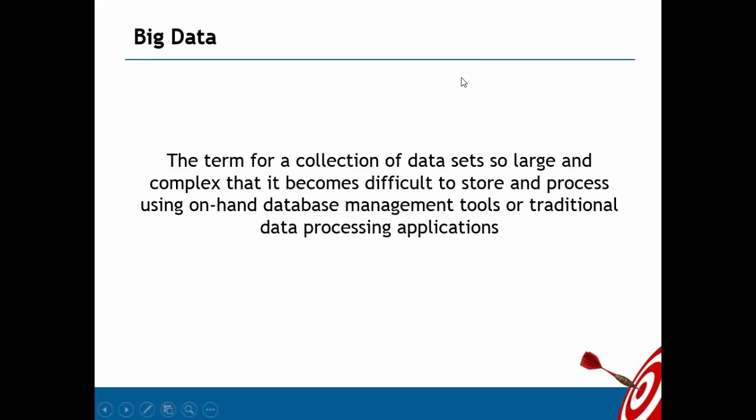The 'complex' part refers to data types. Data can be categorized into three types: structured data, semi-structured data, and unstructured data. Structured data comes from databases following data integrity rules — for example, the first column stores only integers, the second column stores alphanumeric values, and so on. Data stored in tabular format following integrity rules, like data from an RDBMS database, is called structured data.